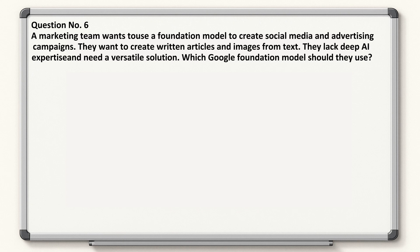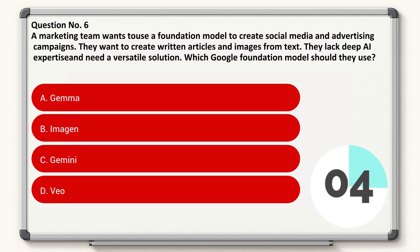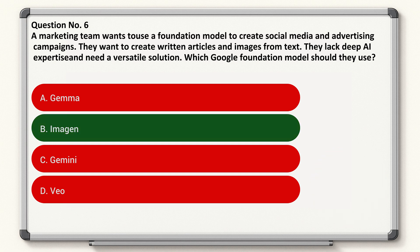Question number six: a marketing team wants to use a foundation model to create social media and advertising campaigns. They want to create written articles and images from text. They lack deep AI expertise and need a versatile solution. Which Google foundation model should they use? Correct answer is C.